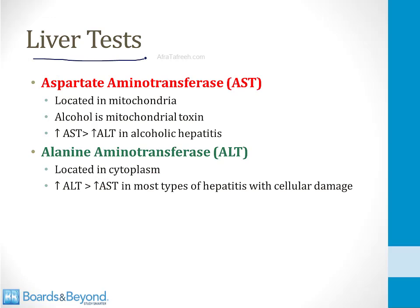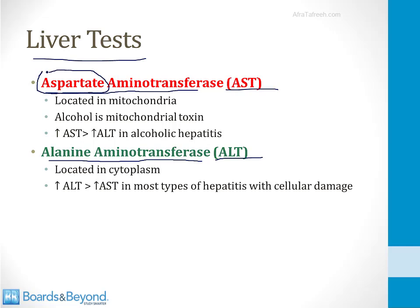The first two tests I'll talk about are measurement of the serum enzyme levels of AST and ALT. AST stands for aspartate aminotransferase, and ALT stands for alanine aminotransferase. These are enzymes found in the liver that transfer nitrogen groups between amino acids — in the case of AST, it's the amino acid aspartate, and in the case of ALT, it's the amino acid alanine.